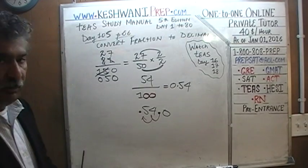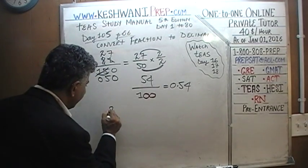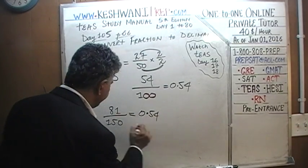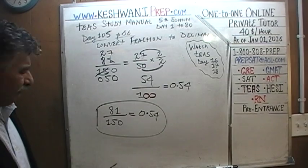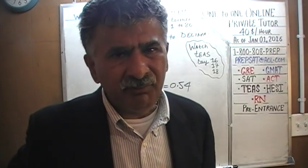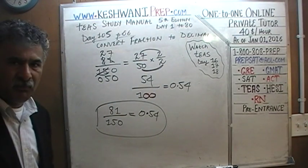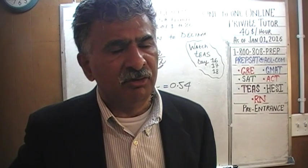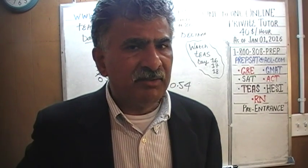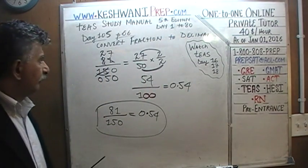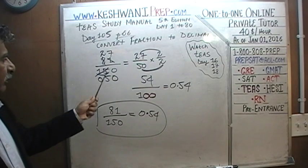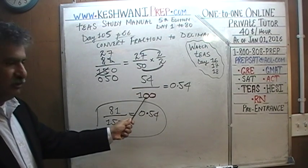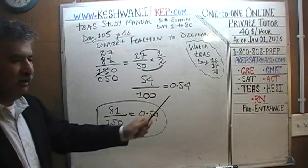So 81 over 150 in decimal is 0.54. In real life we'd just use a calculator, but in the exam you must do it by hand. To summarize: we had 81 over 150, divided top and bottom by 3 to get 27 over 50, multiplied top and bottom by 2 to get 54 over 100, and 54 divided by 100 is 0.54.